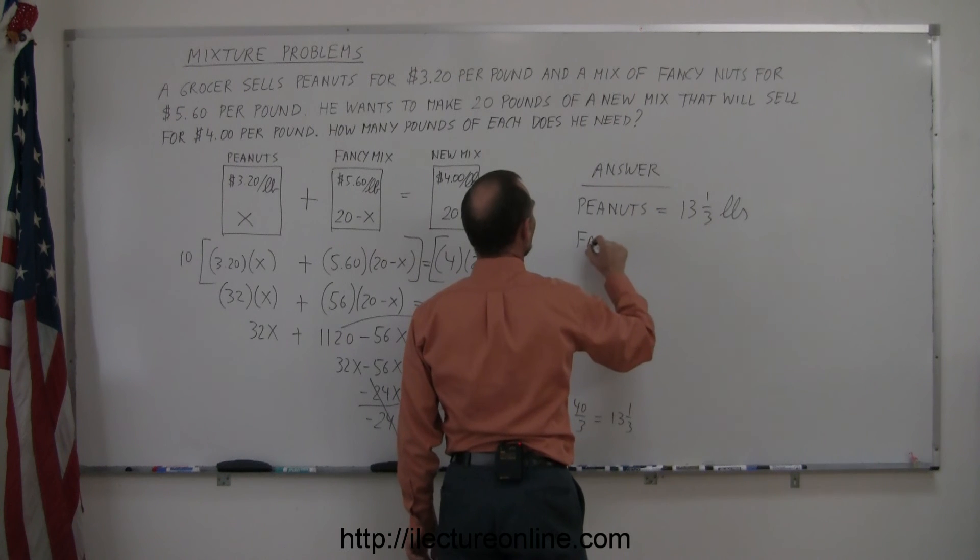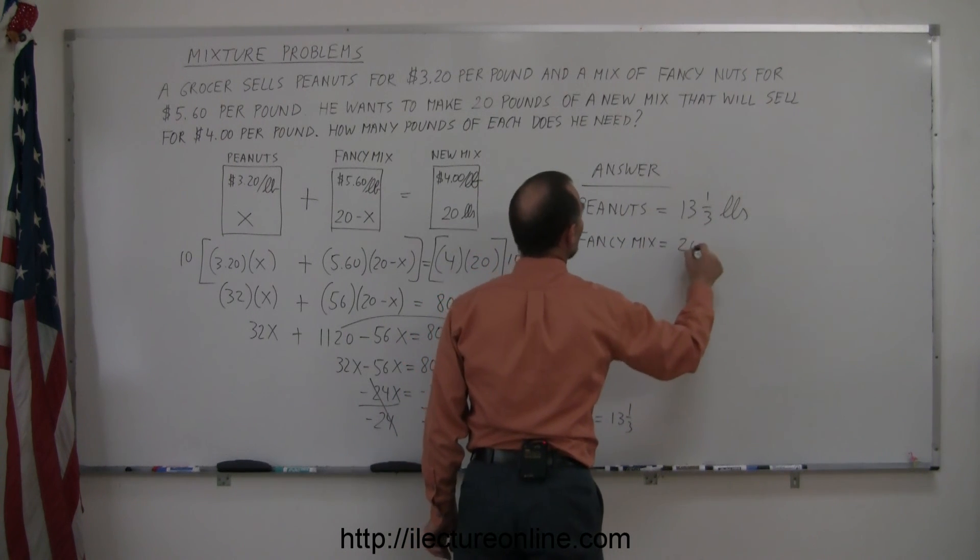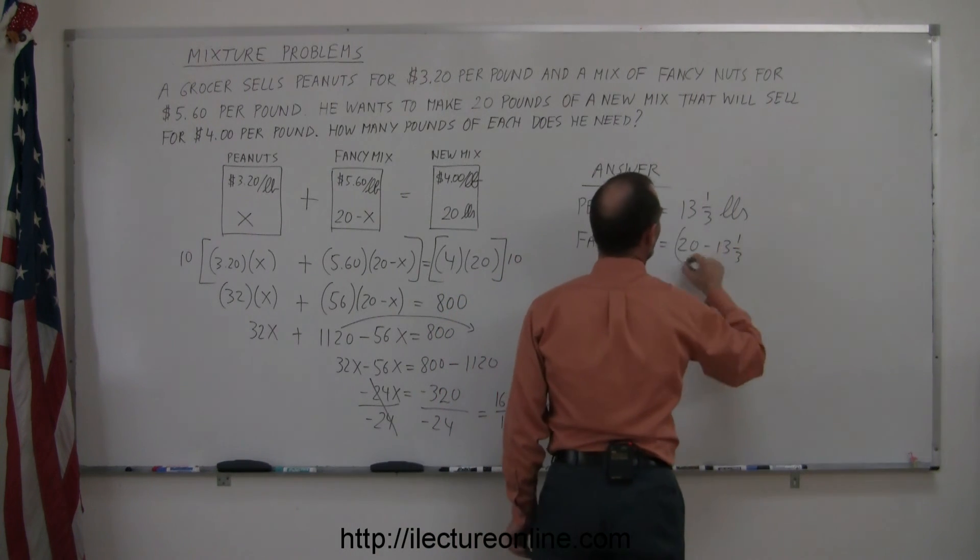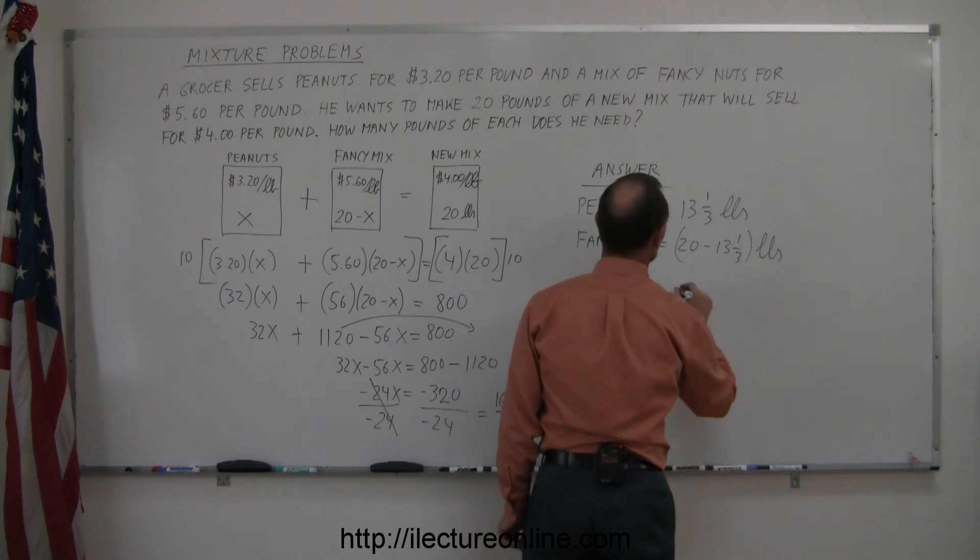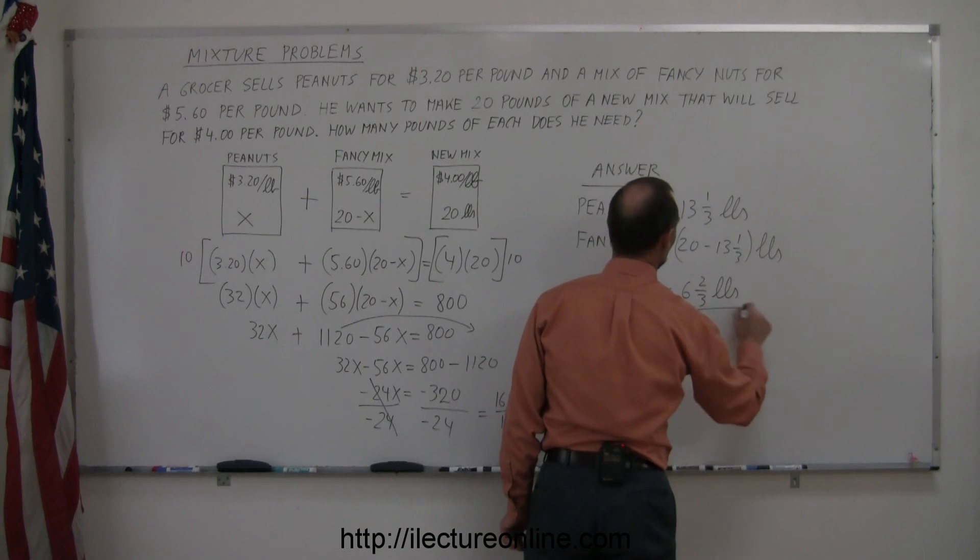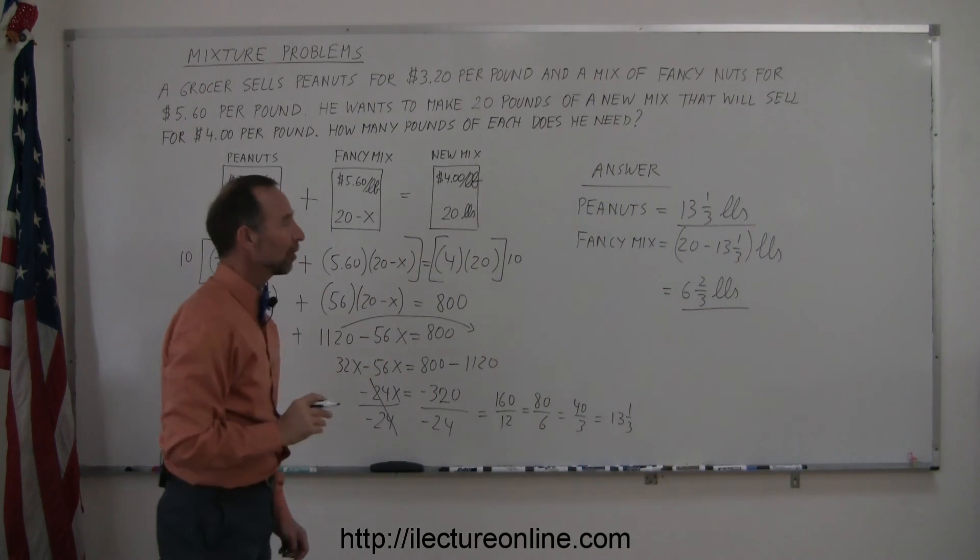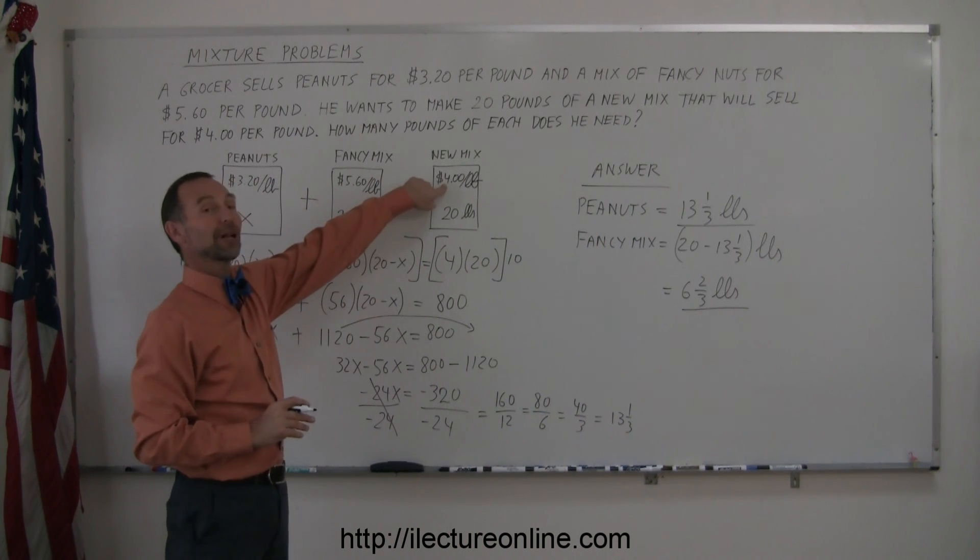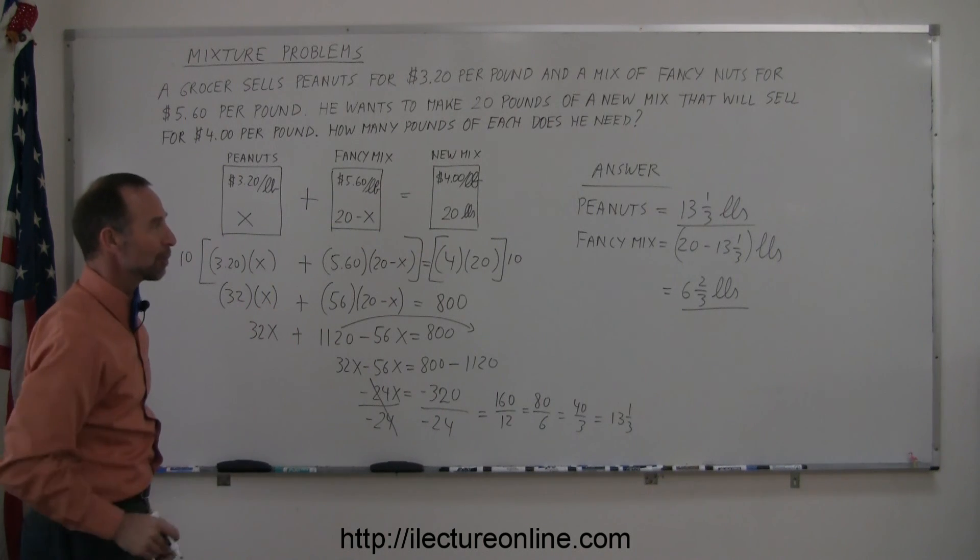Of the fancy mix, we'll need 20 minus that, and 20 minus 13 and a third is 6 and 2/3 pounds of the fancy mix. So if we mix 13 and 1/3 pounds of peanuts with 6 and 2/3 pounds of the fancy mix, we'll come up with a new mix that will sell for $4 a pound, and we'll have 20 pounds of it. And that is how you do a problem like that.